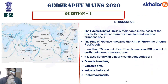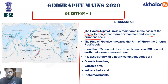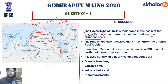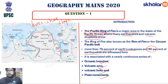For the introduction, write that the Ring of Fire is a major area in the basin of the Pacific Ocean where many earthquakes and volcanic eruptions occur, forming a horseshoe shape. About 75% of the Earth's volcanoes and 90% of earthquakes occur in this zone. It is associated with oceanic trenches, volcanic arcs, volcanic belts, plate movements, sea floor spreading, and earthquakes.